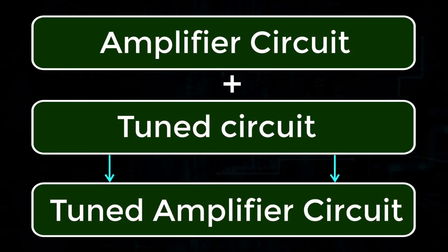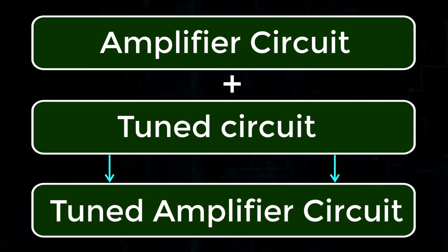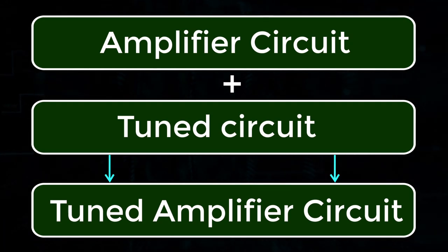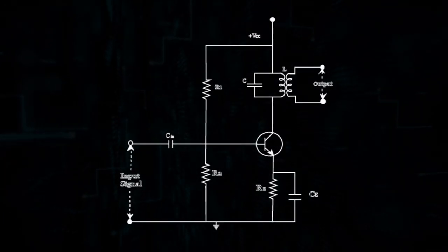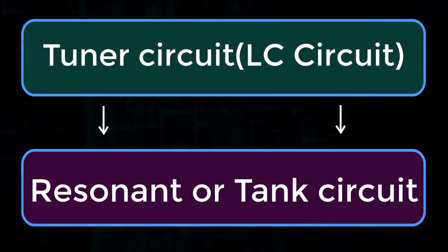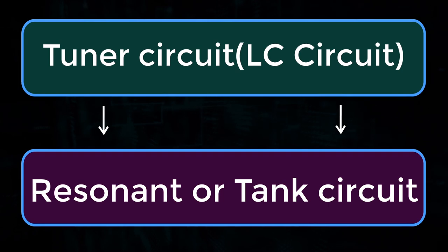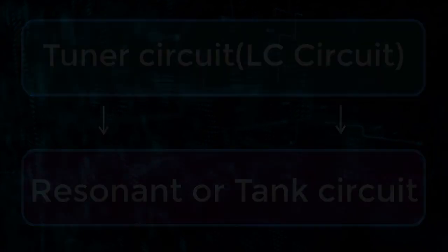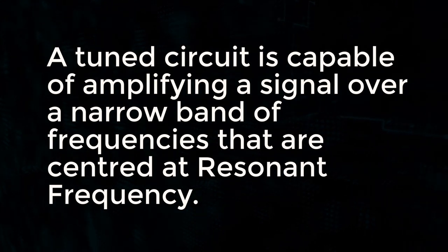When an amplifier circuit has its load replaced by a tuned circuit, such an amplifier can be called as a tuned amplifier circuit. The basic tuned amplifier circuit looks as shown here. The tuned circuit is nothing but an LC circuit which is also called as resonant or tank circuit. It selects the frequency. A tuned circuit is capable of amplifying a signal over a narrow band of frequencies that are centered at resonant frequency.